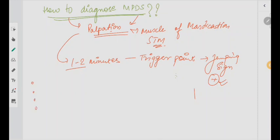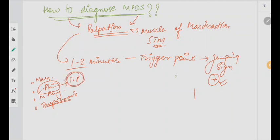We have four muscles of mastication. For example, if you have palpated the lateral pterygoid trigger points and the patient shows a jumping sign, the conclusion is that this particular muscle has taut bands, it is stiff, and needs to be relaxed. You have stiff muscle with taut bands — what do we do? Relax them. You palpate for one to two minutes, applying good pressure, and carefully notice the facial expressions of your patient.